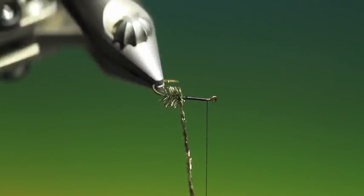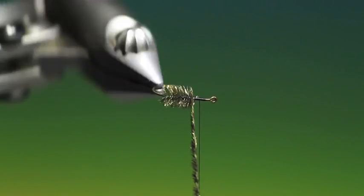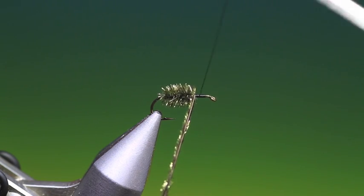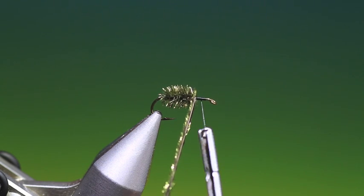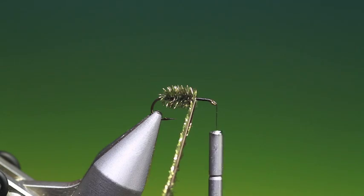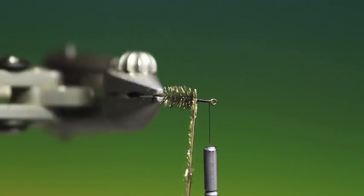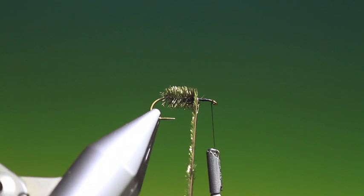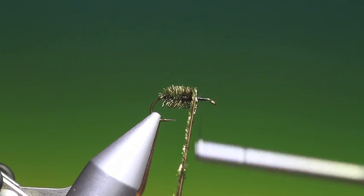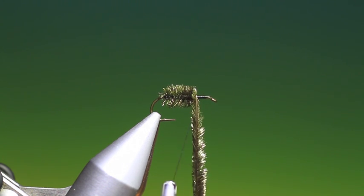Now you want to cover about two-thirds of the hook shank with the peacock herl because we need to leave room for both the wing and the hackle or hackles. There are two original recipes for this: one with just a brown hackle, one with a brown and grizzle hackle mixed. That's what I'm going to do.